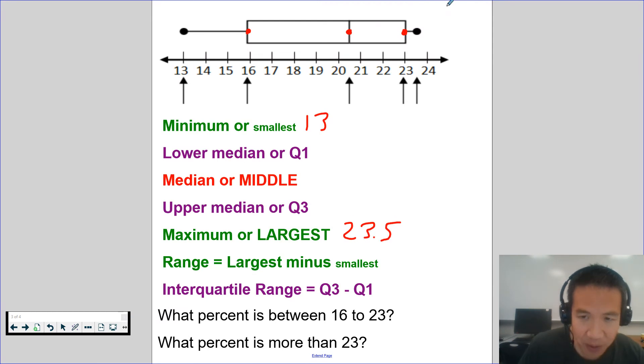23 and a half or 23 and 5/10. Be very careful. I have some kids who say, oh, but the maximum is right here, 24. There is no box plot above it. Median. What's the middle of this box plot right here? 20 and 5/10.